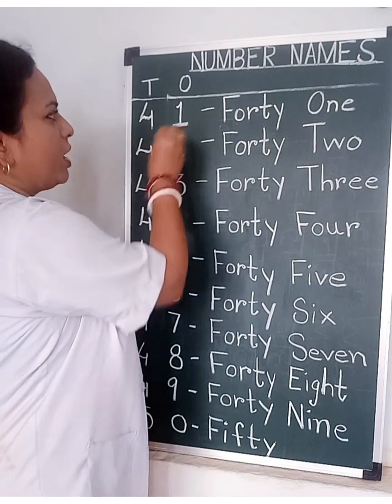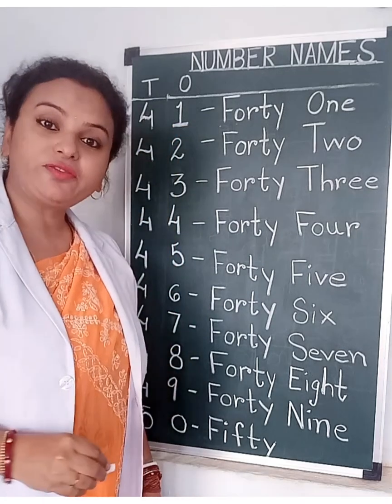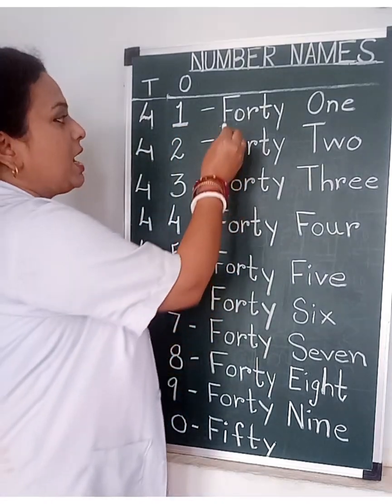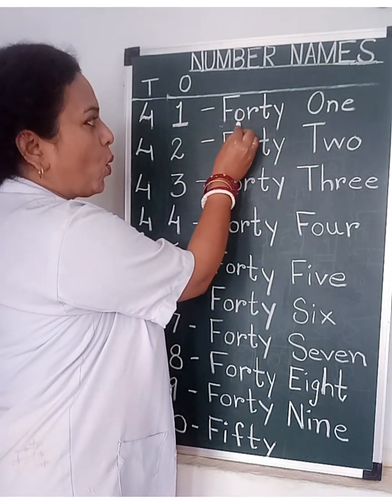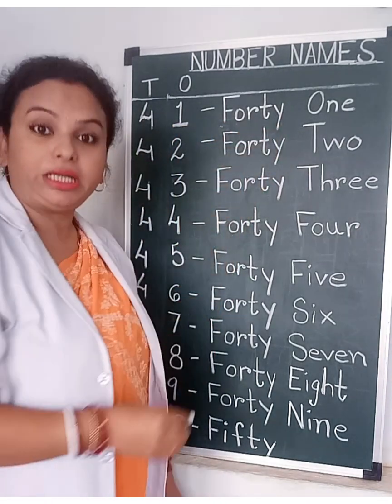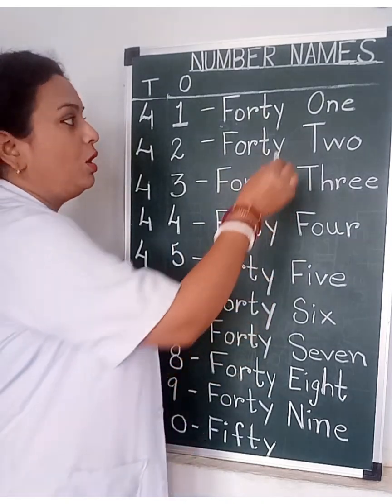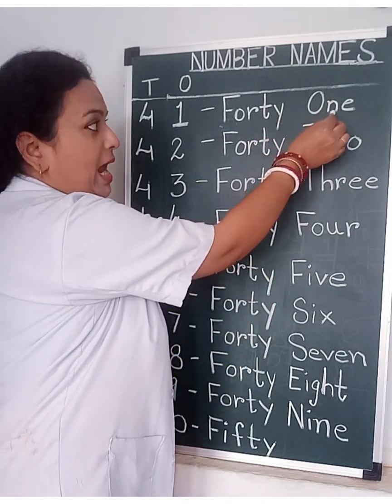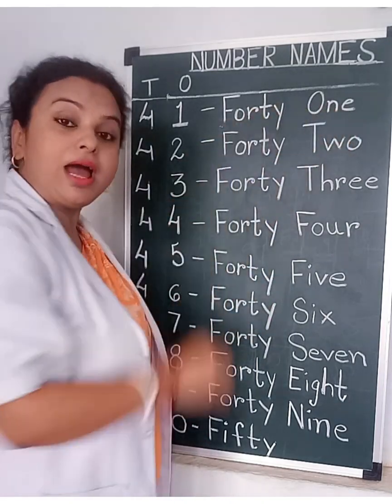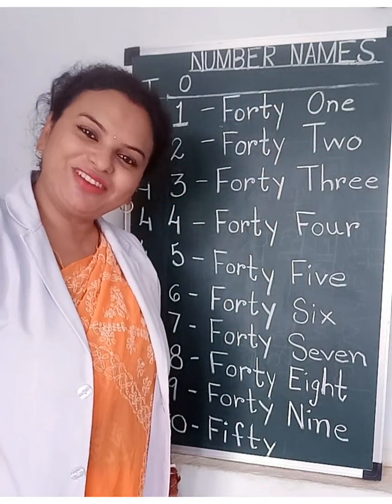4, 1 — 41. F, O, R, T, Y — FORTY. O, N, T — ONE. 41.